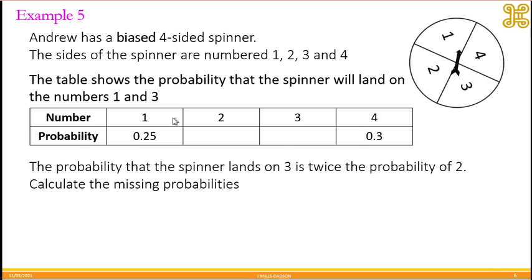If you look at this table, the probabilities for 1 and 4 are given. For 2 and 3, we are not given the probabilities. We've been given a clue that the probability that the spinner lands on 3 is twice the probability of 2.